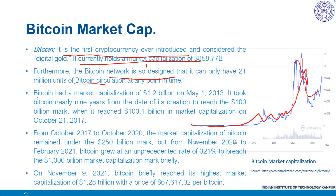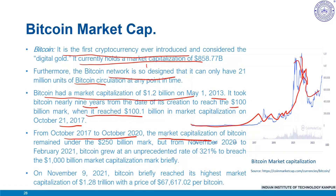Bitcoin had a market cap of $1.2 billion on May 1, 2013. It took Bitcoin nearly 9 years to reach the $100 billion mark, reaching $100.1 billion around October 2017. From October 2017 to 2020, market capitalization remained under $250 billion. But from November 2020 to February 2021, Bitcoin grew at an unprecedented rate of 321%, briefly breaching the $1,000 billion capitalization mark. On November 2021, Bitcoin briefly reached its highest market capitalization of $1.28 trillion, with a price of around $67,617 per Bitcoin.